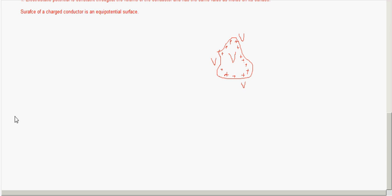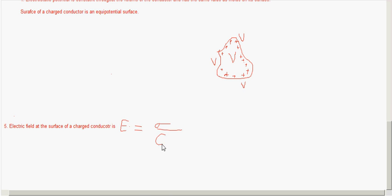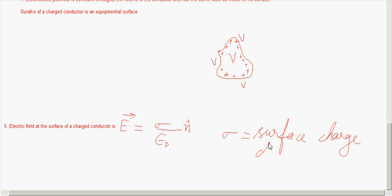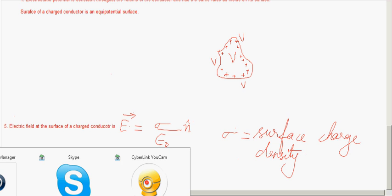The fifth property: the electric field at the surface of a charged conductor is E = σ/ε₀, which can also be written in vector form as σ/ε₀ n̂, where σ is the surface charge density and n̂ is a unit vector normal to the surface in the outward direction.